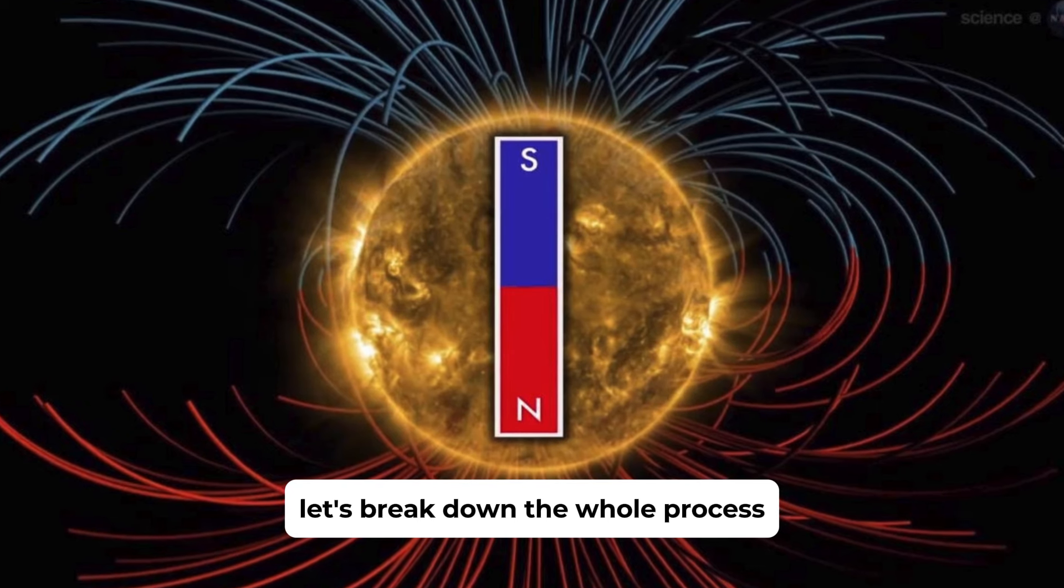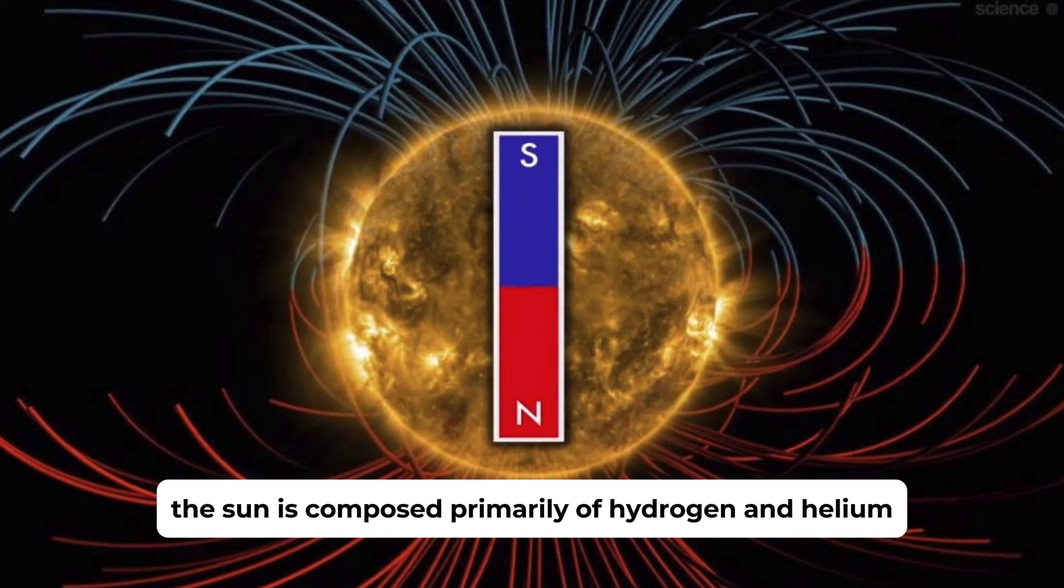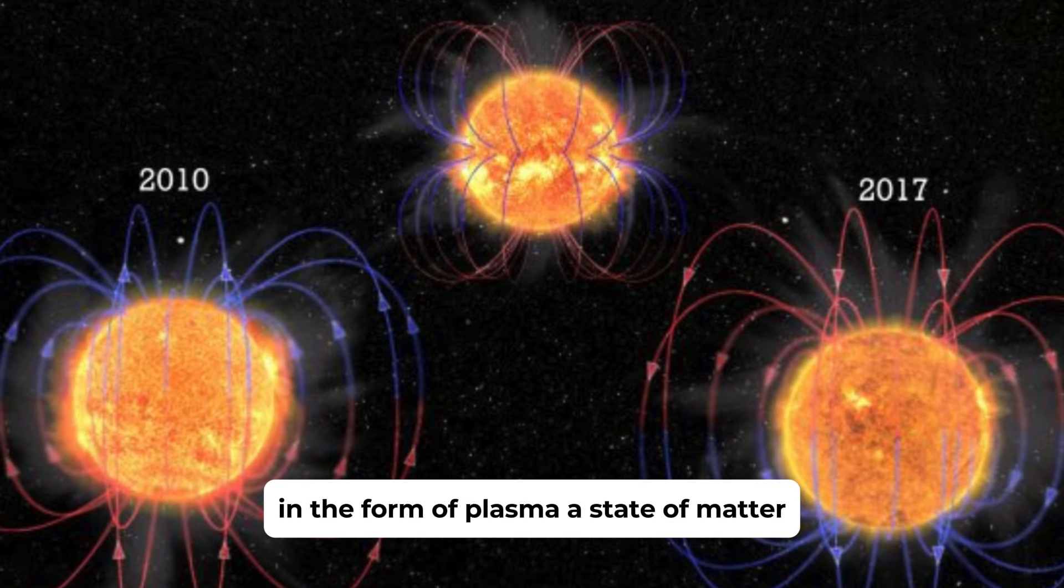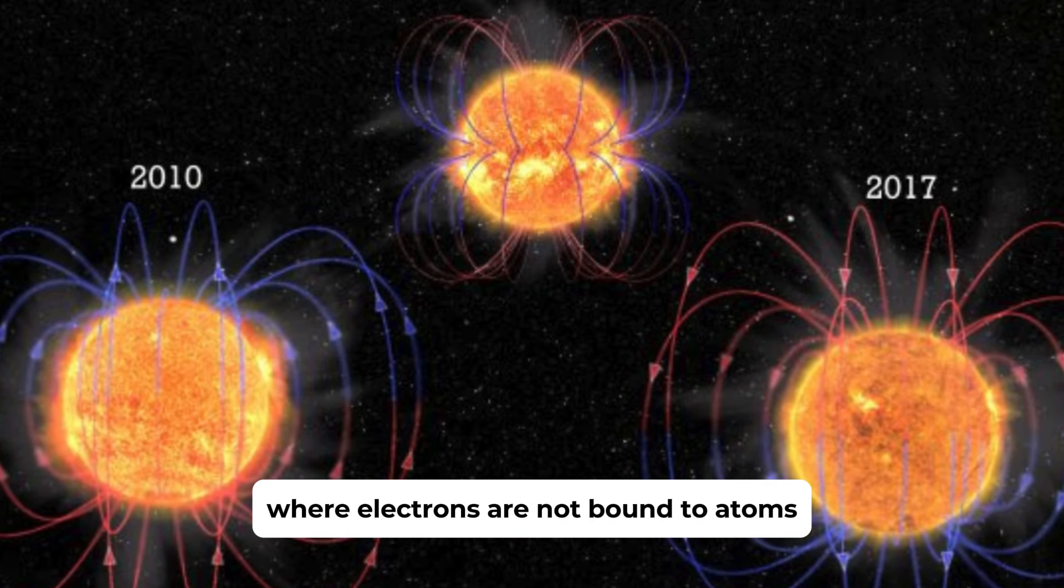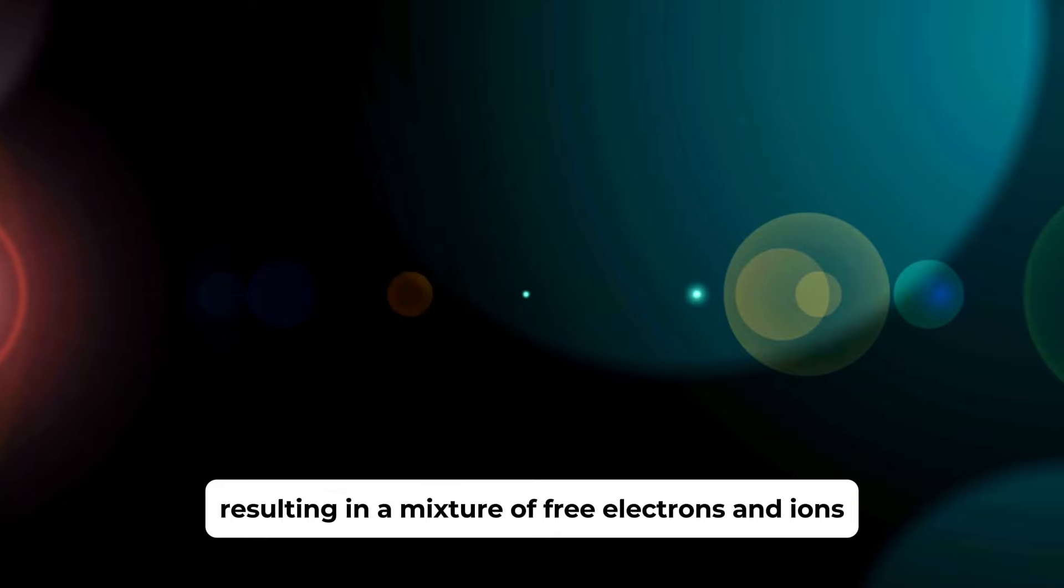Let's break down the whole process and get a closer look at the Sun today. The Sun is composed primarily of hydrogen and helium in the form of plasma, a state of matter where electrons are not bound to atoms, resulting in a mixture of free electrons and ions.